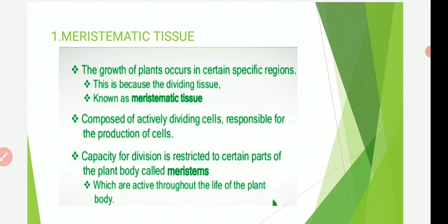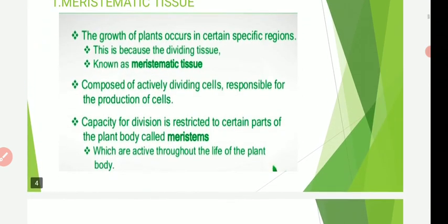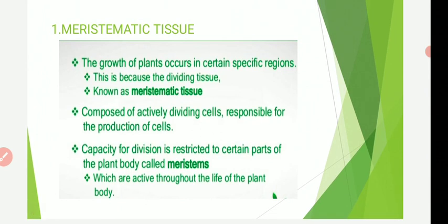Meristem is considered as juvenile or secondary dividing tissue which persists in developing or mature plant body. The word meristem is derived from the Greek word 'meristos' meaning divisible. Meristematic tissue has particular characteristics: first, it is composed of immature cells which are in a state of cell division. The cell wall of meristematic cells is thin and the cells are isodiametric. Intercellular spaces are absent, cells have a prominent nucleus and dense cytoplasm without ergastic substances, and vacuoles are generally absent or very small.